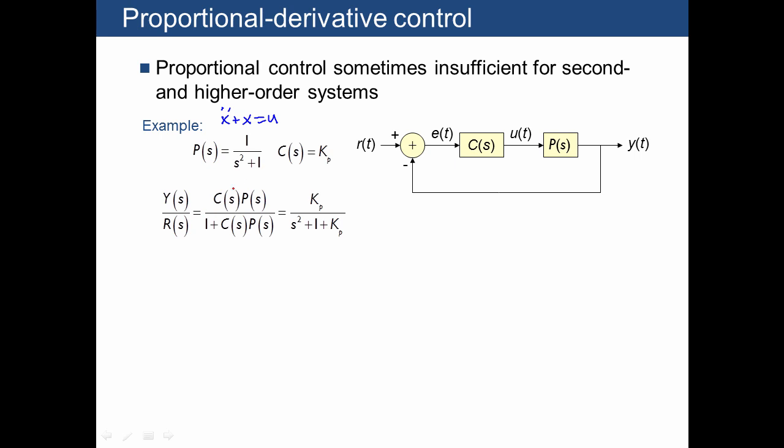If we apply the closed loop transfer function for this plant and just using proportional control, here's what we get. Notice that this term right here is the omega n squared, and so we have a system with no damping, zeta equals zero, although kp does allow us to select any value of omega n that we want.